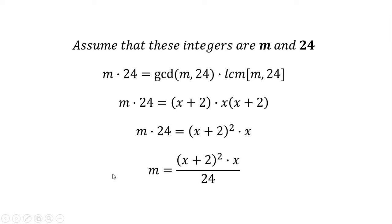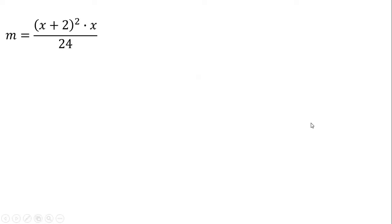We are going to try to find the smallest possible value of M. Since x is a positive integer, to find the smallest M we should use the smallest possible value of x, but we must be careful because M must also be an integer. So we start with x equals 1 and check if M is an integer. If not, we try x equals 2, then 3, then 4, and so on until M is an integer.